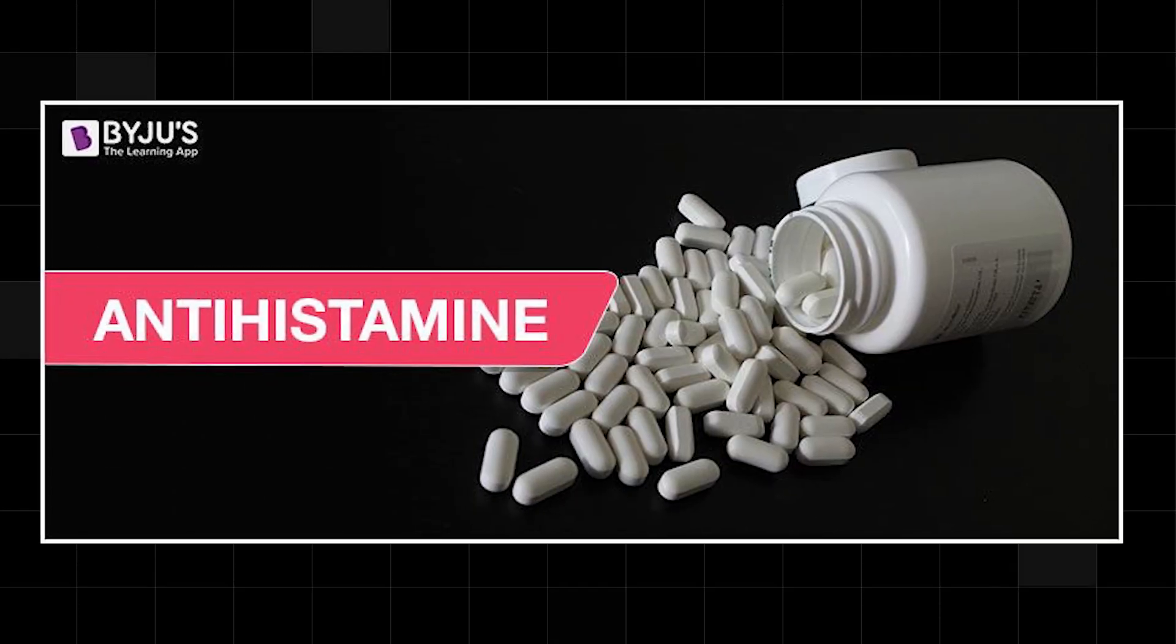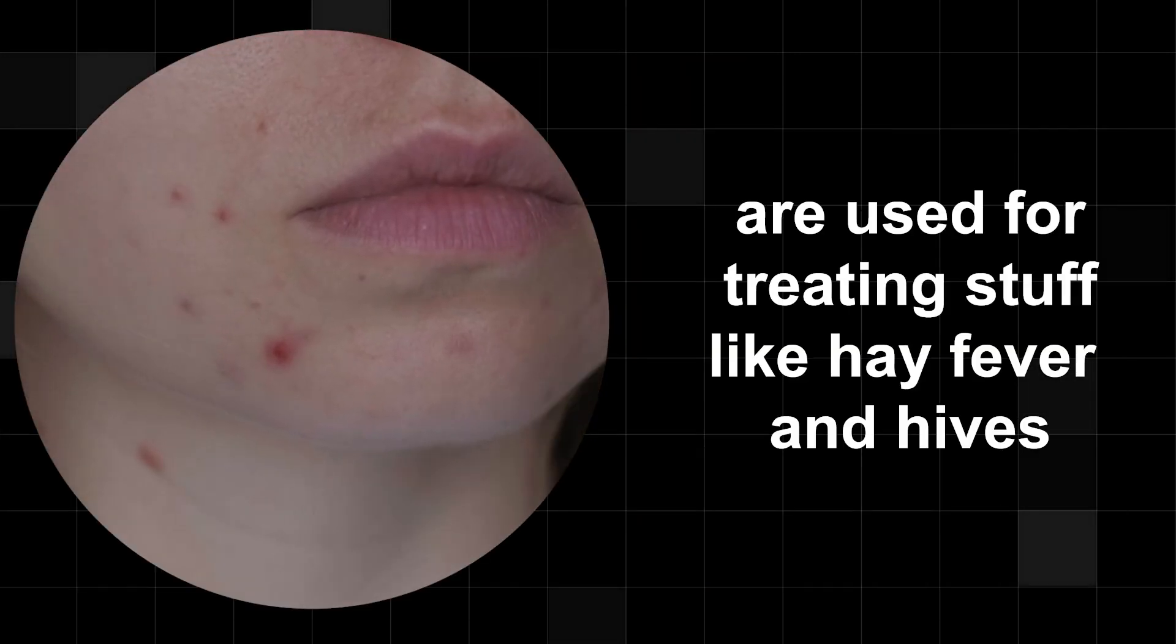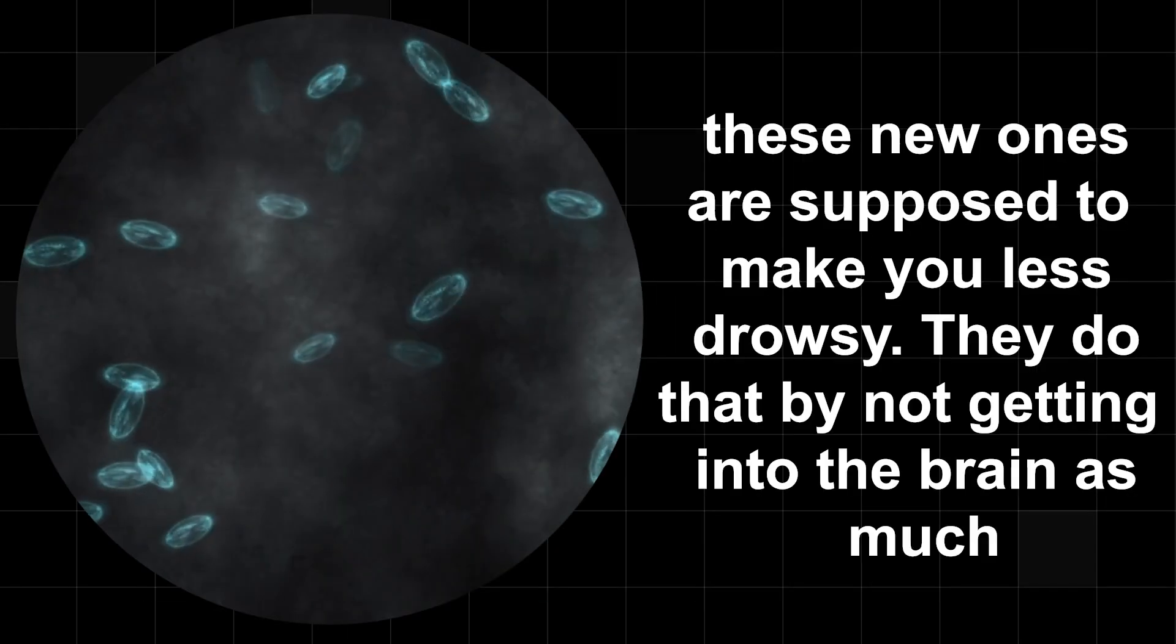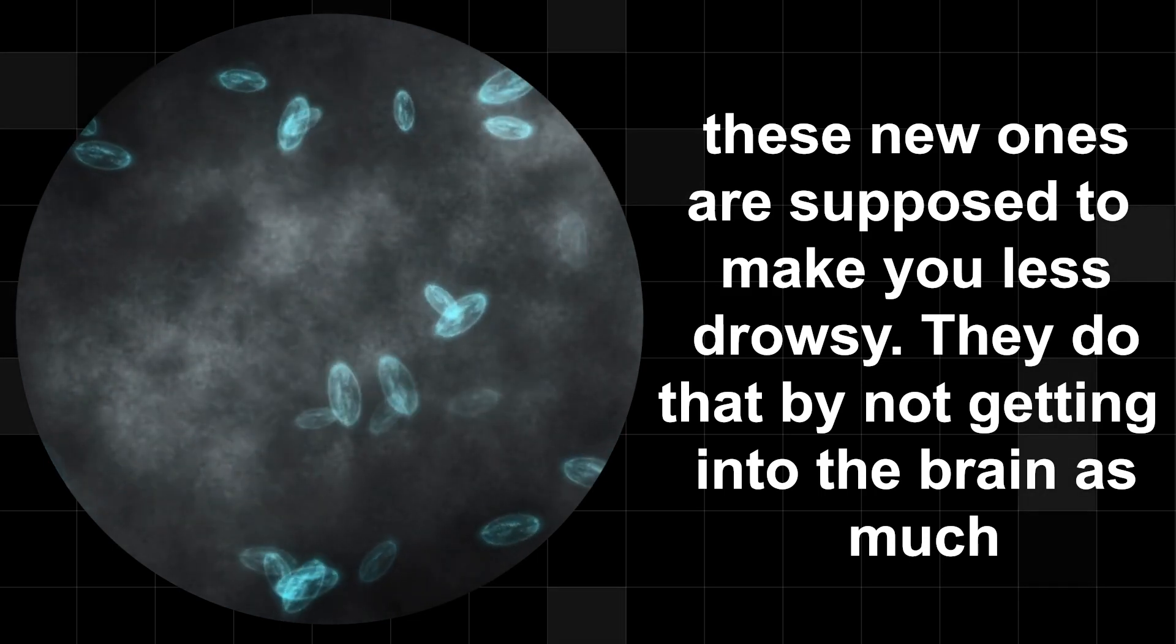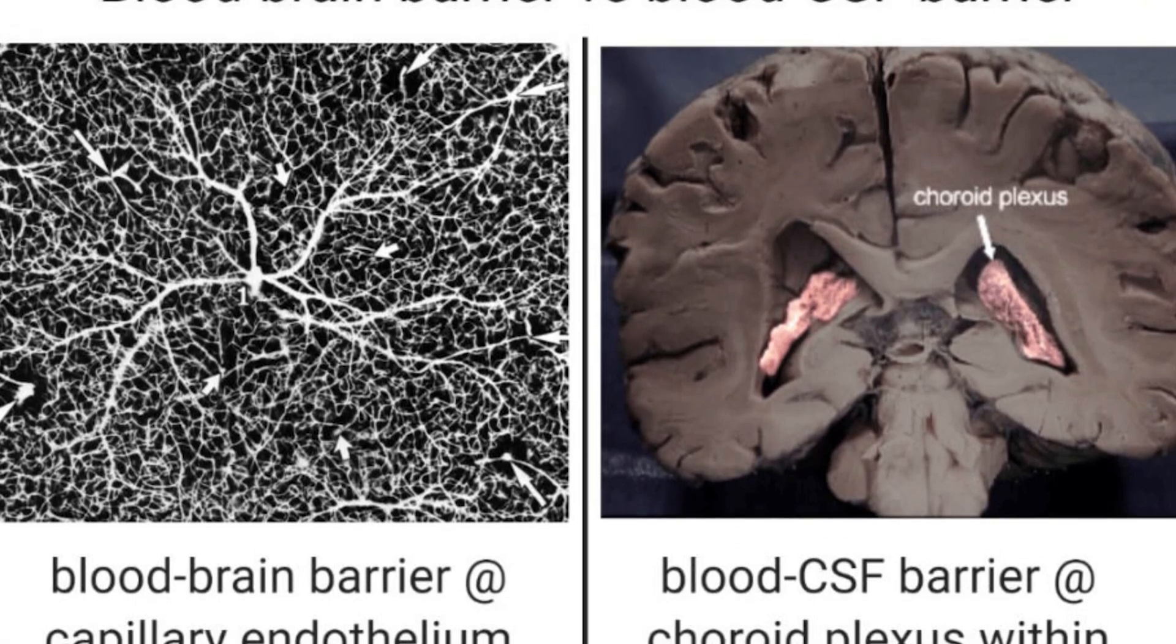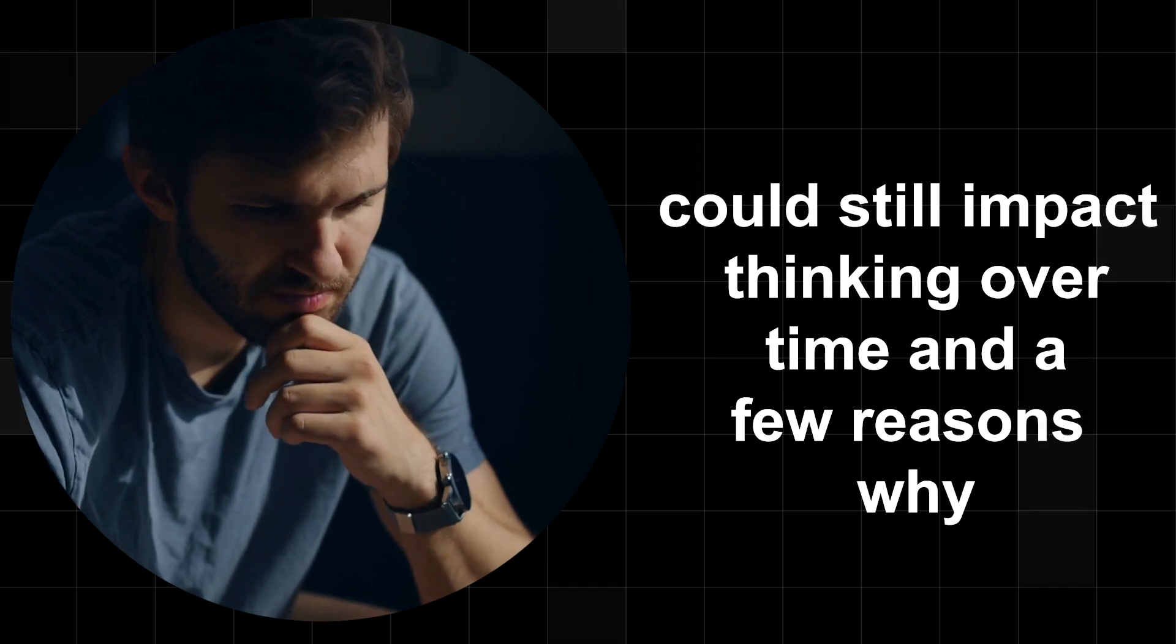Six, antihistamines. Second-generation antihistamines, meds like Claritin, Zyrtec, and Allegra, are used for treating stuff like hay fever and hives. Unlike old antihistamines, these new ones are supposed to make you less drowsy. They do that by not getting into the brain as much. But even though they don't cross the blood-brain barrier as much, long-term use of these antihistamines could still impact thinking over time and a few reasons why.